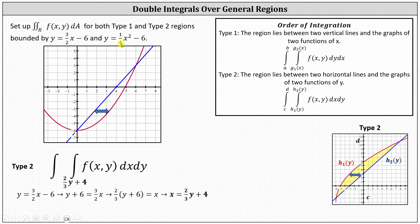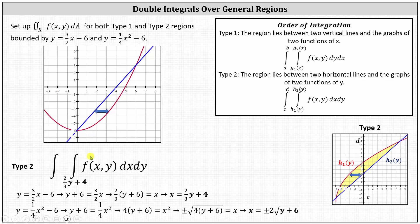Now we need to solve y equals 1/4 x squared minus 6 for x. We first add 6 to both sides, then multiply both sides by 4, then take the square root of both sides, which gives x equals plus or minus the square root of 4(y + 6), or x equals plus or minus 2√(y + 6). But for our region R, x is non-negative, so we use the positive square root. Because the region R is bounded on the right by the parabola, 2√(y + 6) is the upper limit of integration.